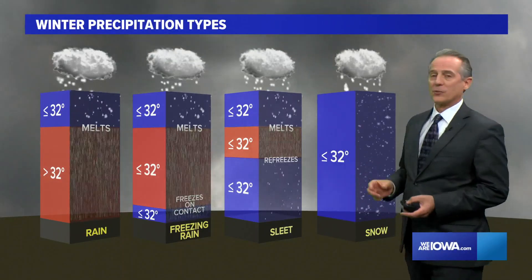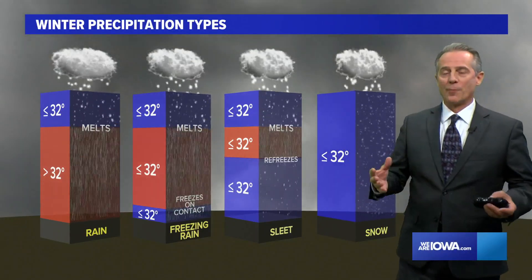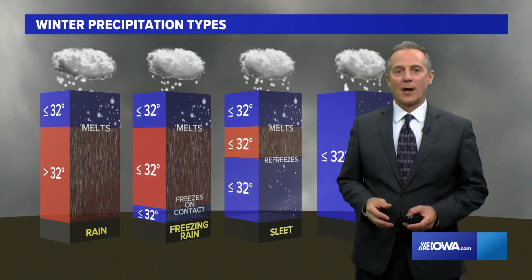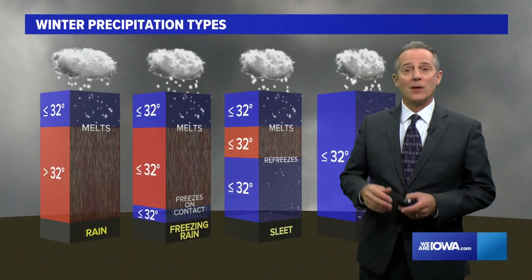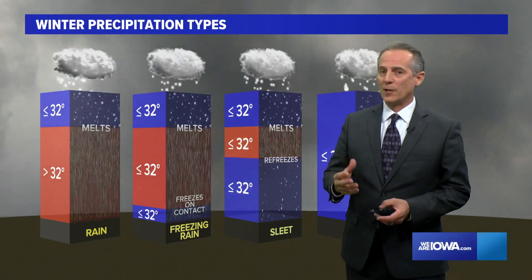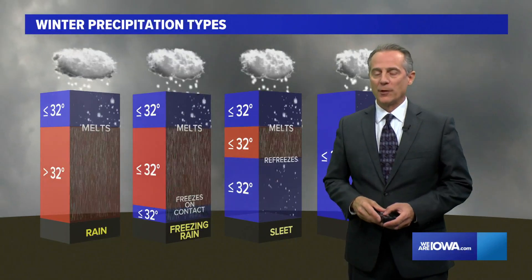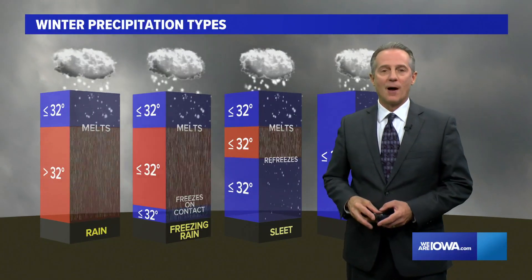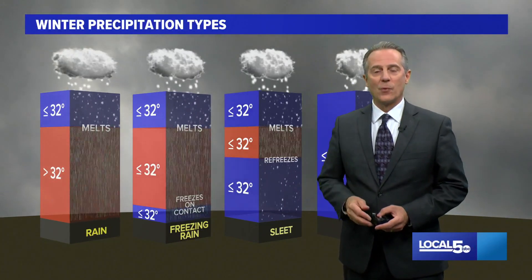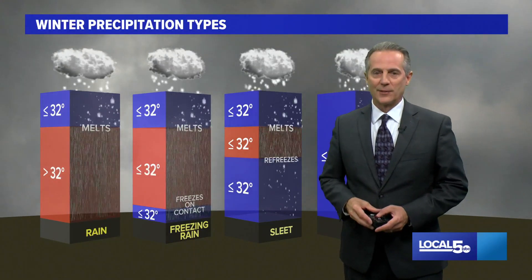That's just good old fashioned snow. Hope that explains how you get your precipitation types. You can find all this information and more weather explainers at the Local 5 Weather Lab on YouTube and weareiowa.com.